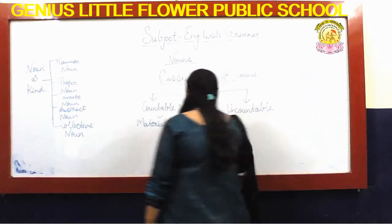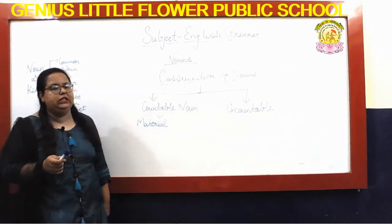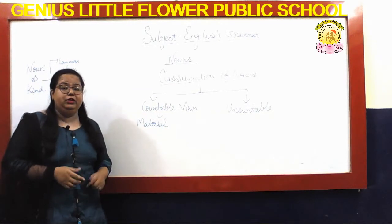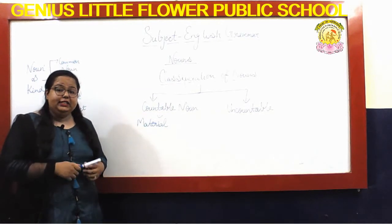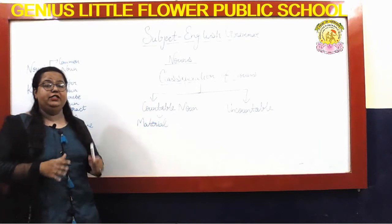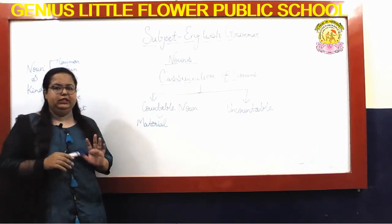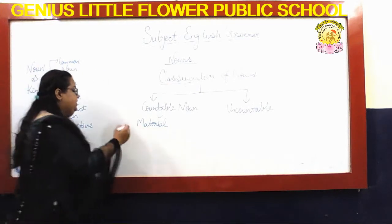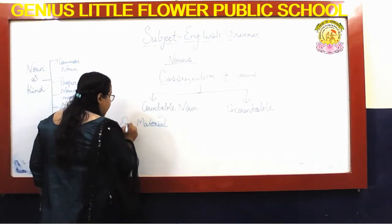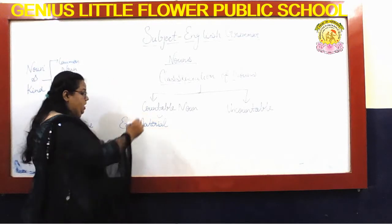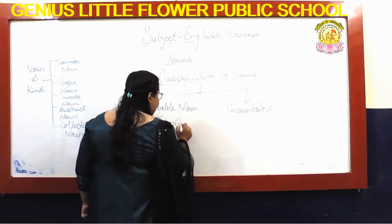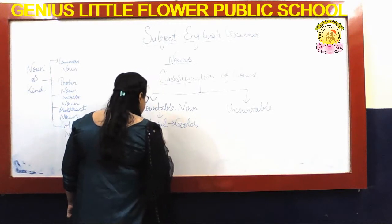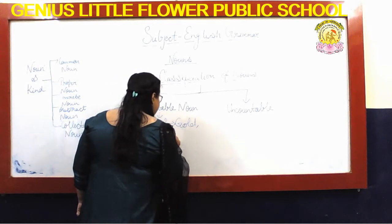When we talk about countable — you already know — countable means things we can count. And uncountable means which we can't count. Now, what examples come under this? You can see I have already written here — examples include material: gold, iron, diamond, and other things.